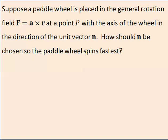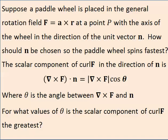The scalar component of curl of f in the direction of n is the magnitude of the cross product of the curl times the cosine of the angle between the curl and my paddle wheel, the axis of my paddle wheel. Now, for which values of theta is the scalar component of the curl of f the greatest?